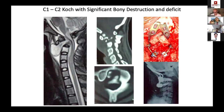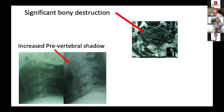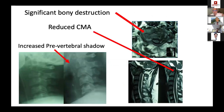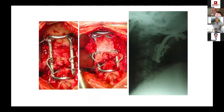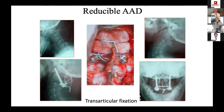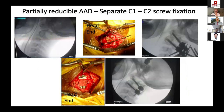In a case with significantly reduced cervicomedullary angle and soft tissue causing compression, intraoperatively a significant amount of granulation tissue was excised, followed by occipitocervical fixation using a Hartshill rectangle and sublumbar wiring with copious graft. Meticulous fusion is essential for these patients. For reducible AAD, transarticular fixation can be performed — combined with Gallie's fixation to create a strong construct with the graft stabilized. For partially reducible cases, reduction screws at C1-C2 achieve good internal reduction.